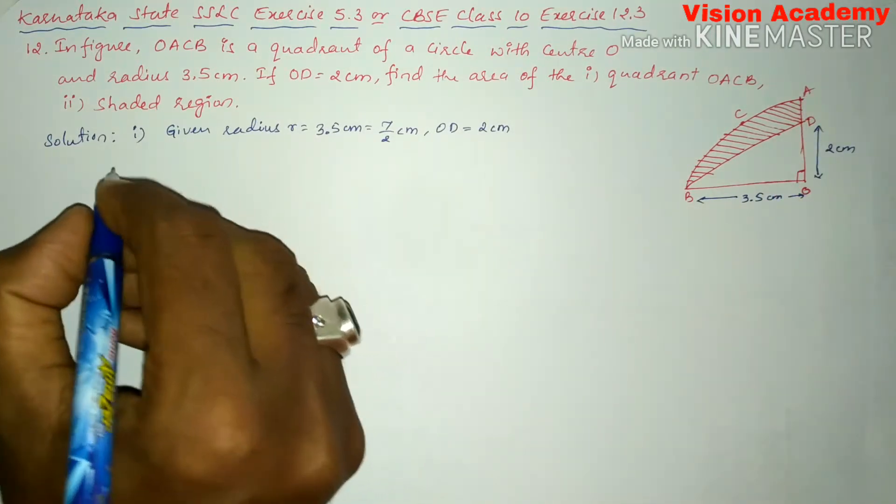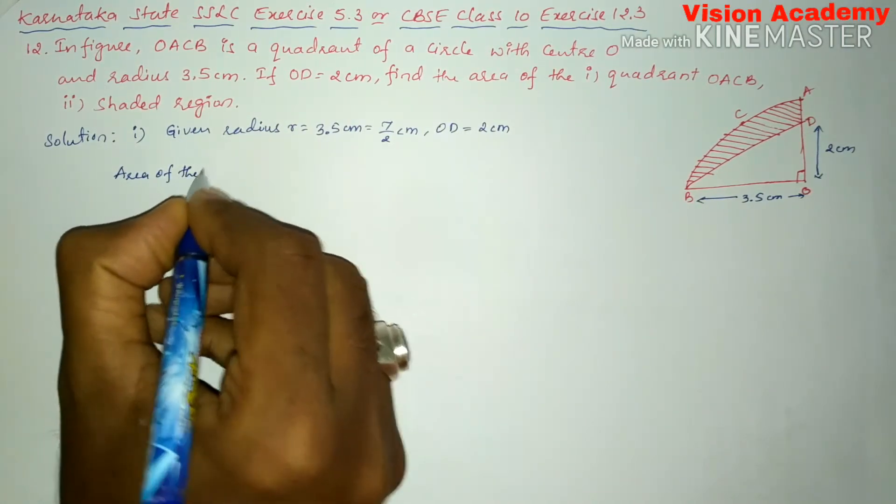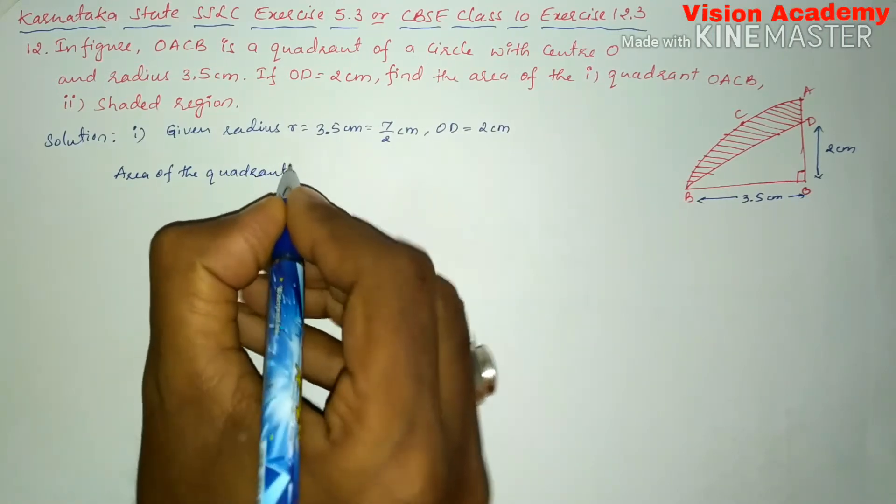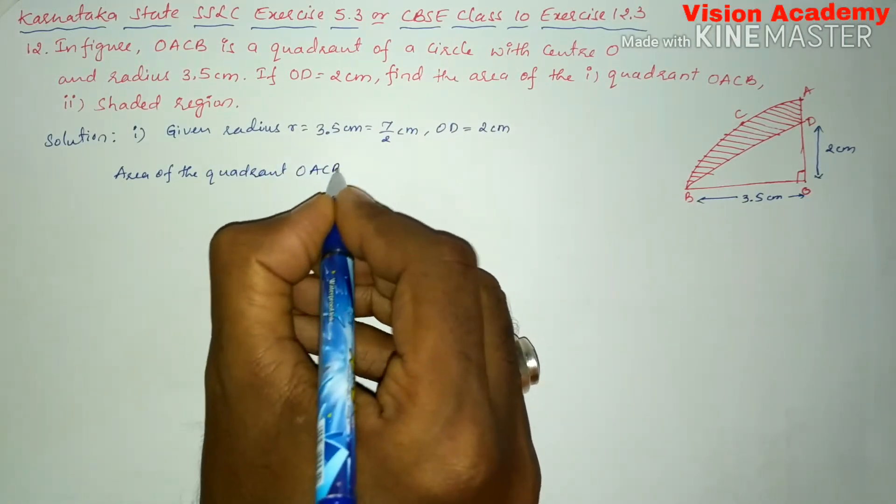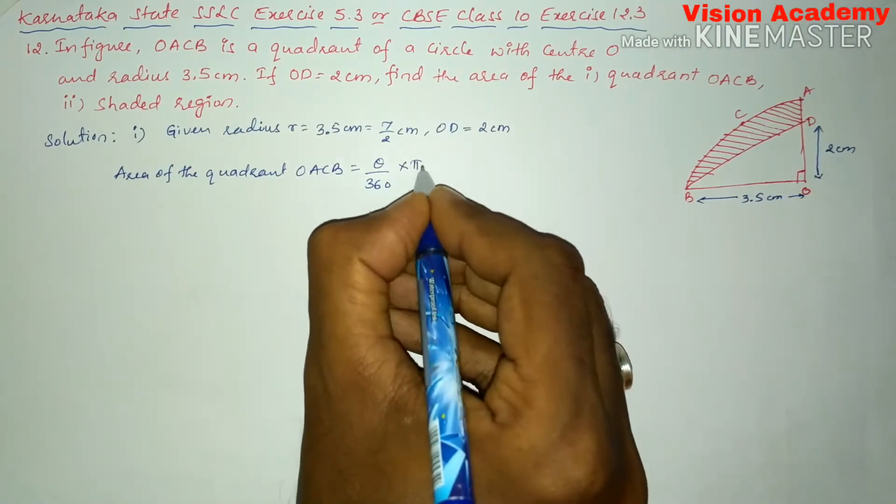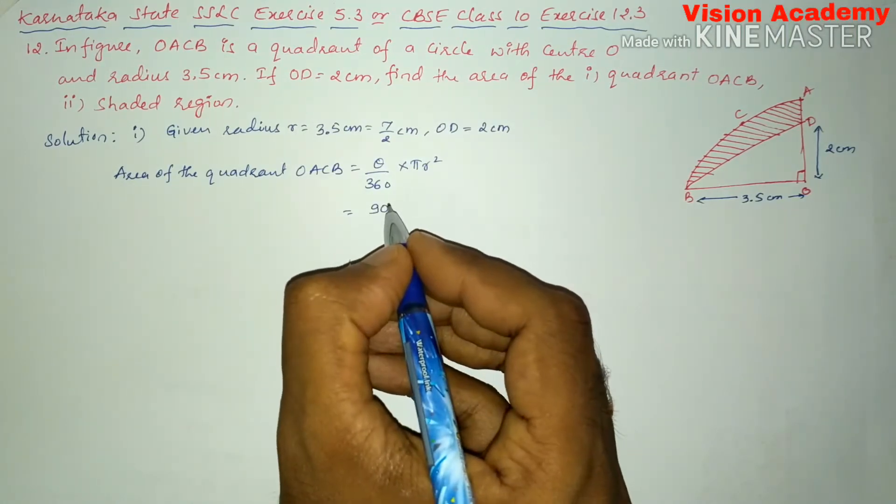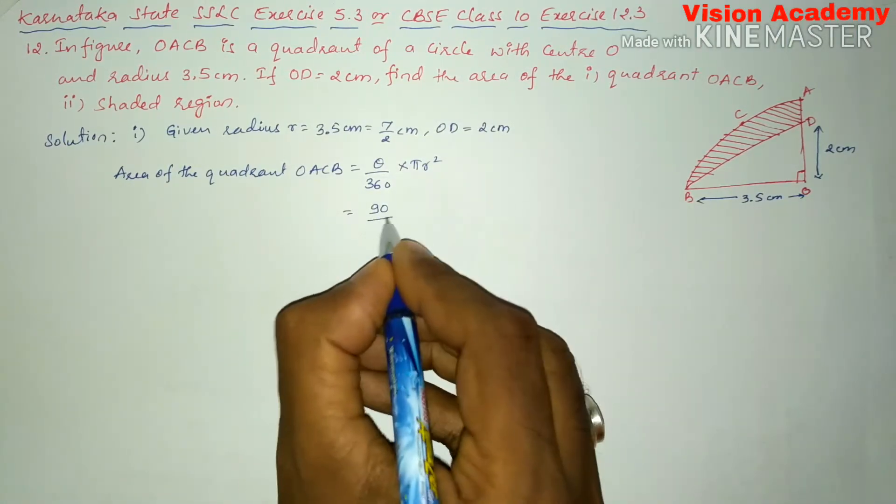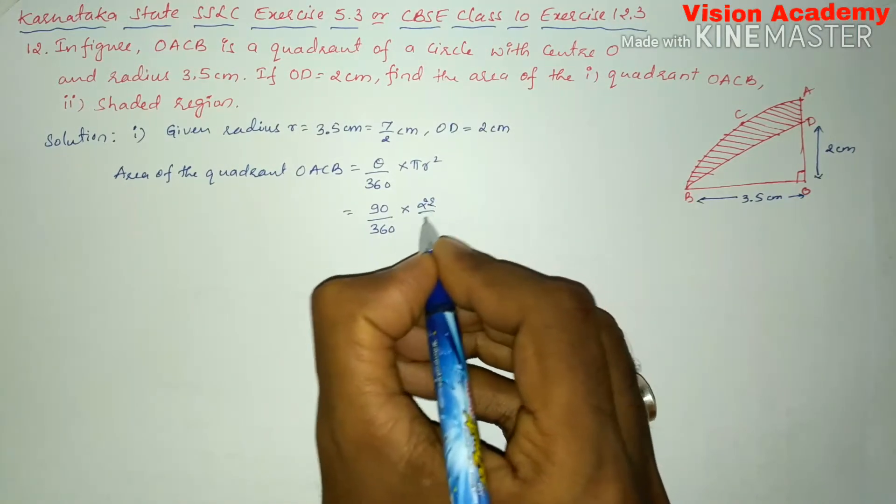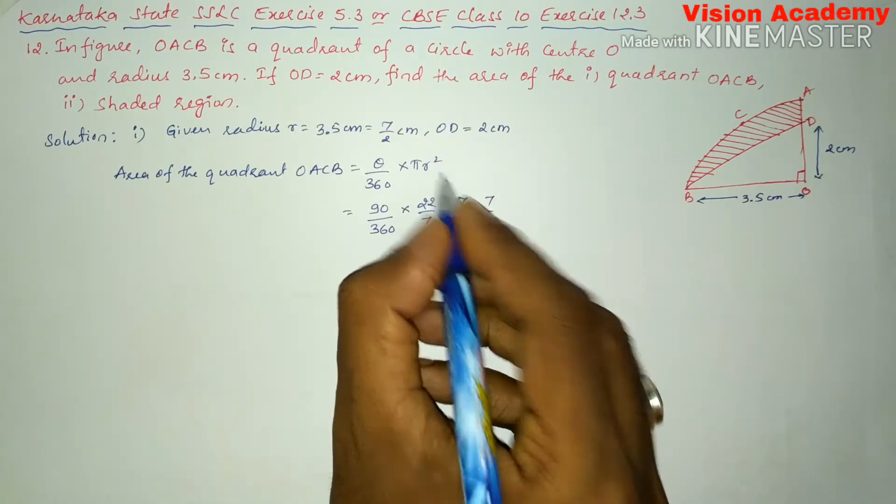Now, let us write: area of the quadrant OACB is equal to theta divided by 360 into pi R squared. Here, theta is 90 degrees because it is a right angle, divided by 360 into pi is 22 by 7, and R can be written as 7 by 2 into 7 by 2 because it is R squared.